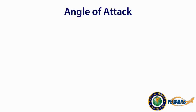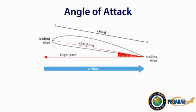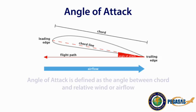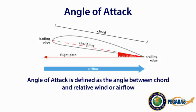To better understand these devices and how they can be used, let's look at what angle of attack is. Angle of attack is defined by two references: the chord line, which is an imaginary line drawn from the leading edge to the trailing edge of an airfoil, and the relative wind, shown by the arrow marked Airflow. Relative wind is equal and opposite to the flight path of the aircraft. The angle of attack is the angle between the chord line and the relative wind.